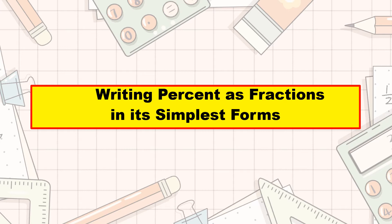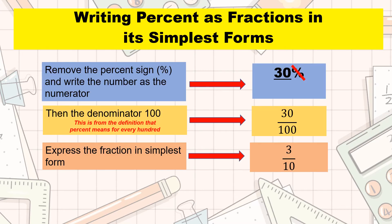Let's now move on to renaming percent to fractions in its simplest forms. To change percent into a fraction, remove the percent sign and write that number as the numerator, then write 100 as the denominator — this is from the definition that percent means for every 100. Finally, express your answer in simplest form. For example, 30%: we drop the percent symbol, making it 30. Then we write 30 as the numerator and 100 as the denominator, making it 30 hundredths. Then, to express it in simplest form, that will be 3 tenths.